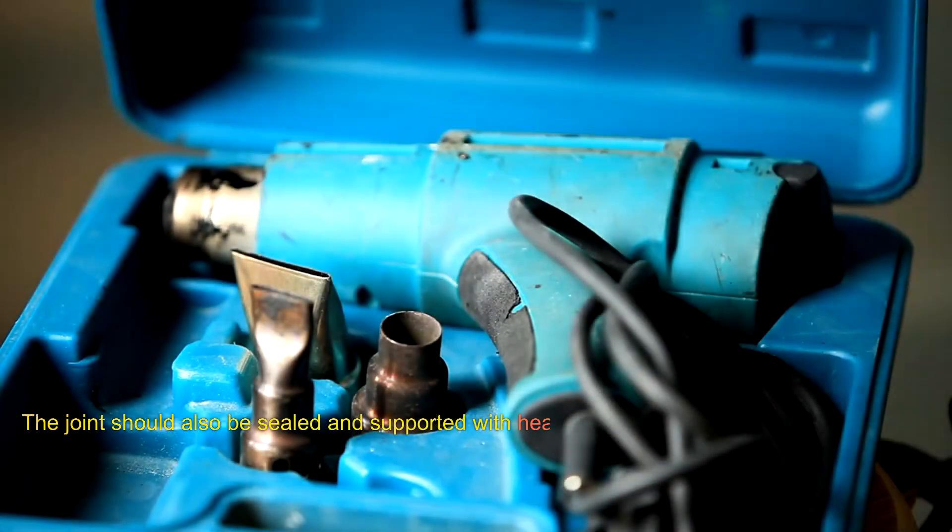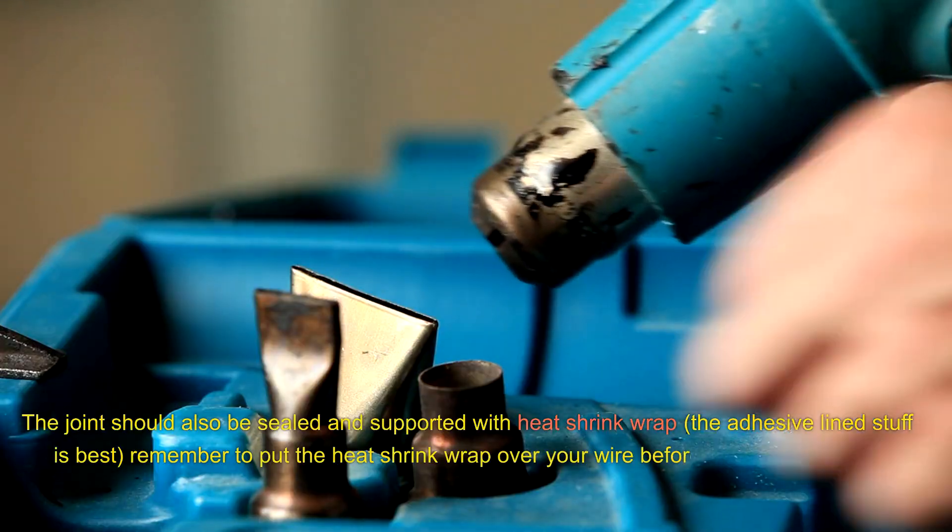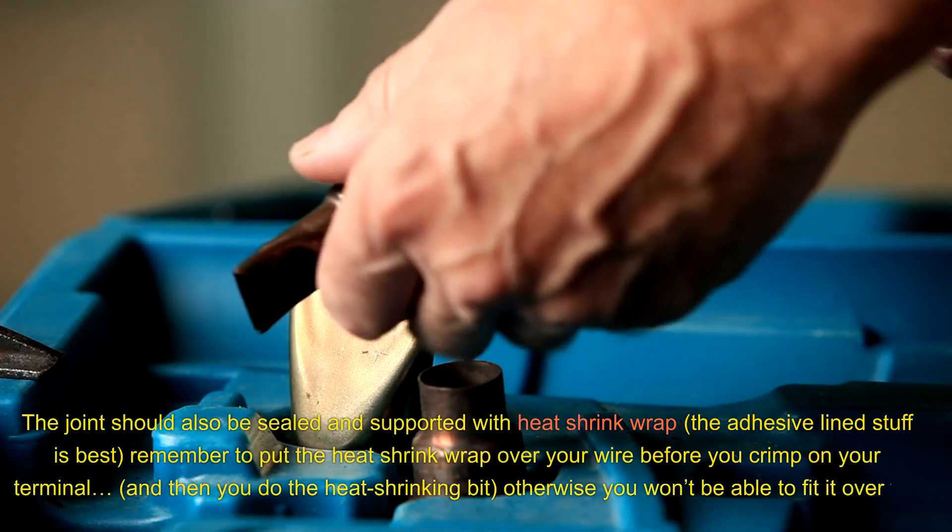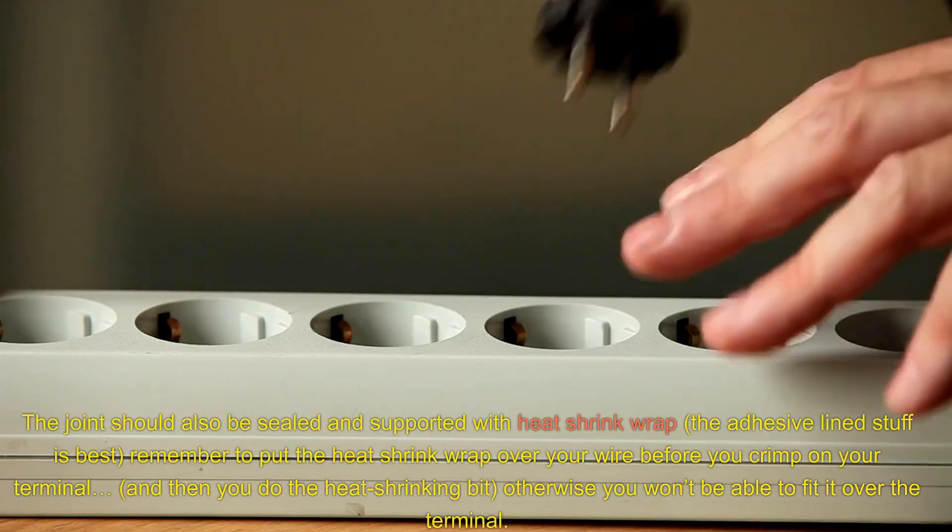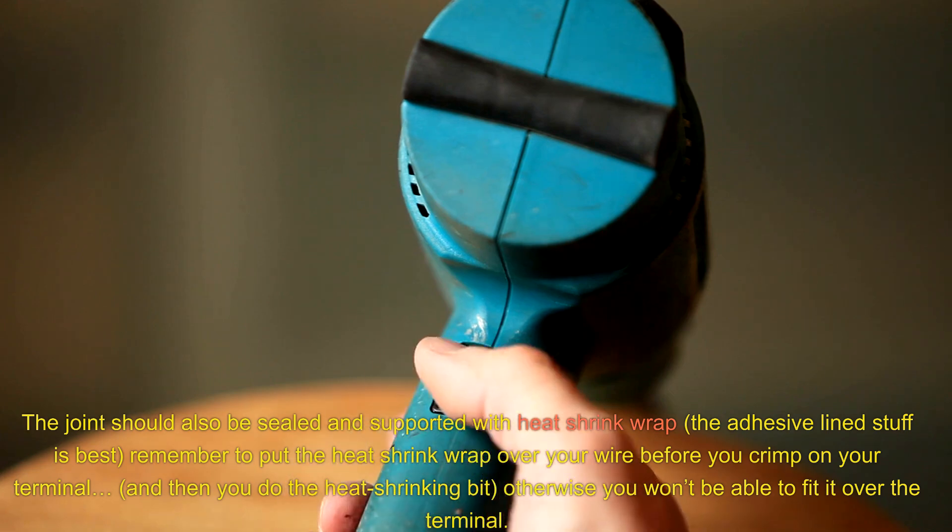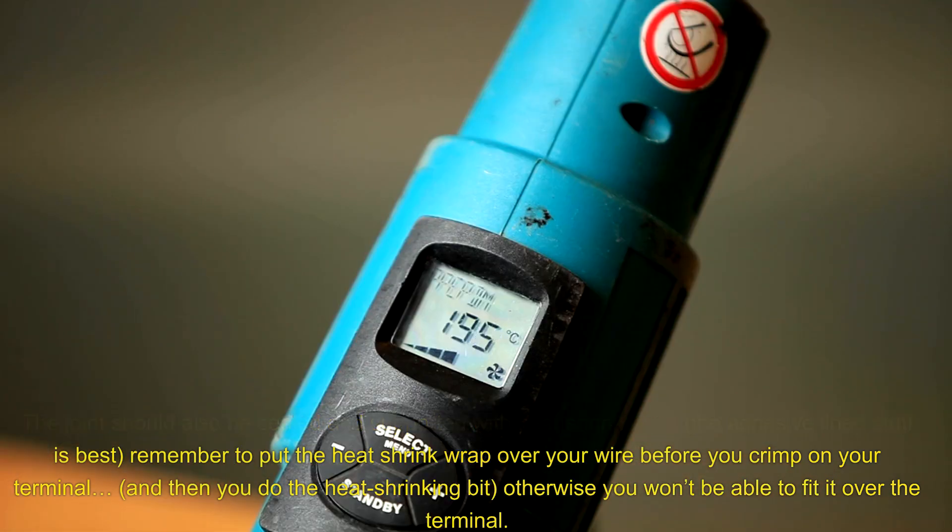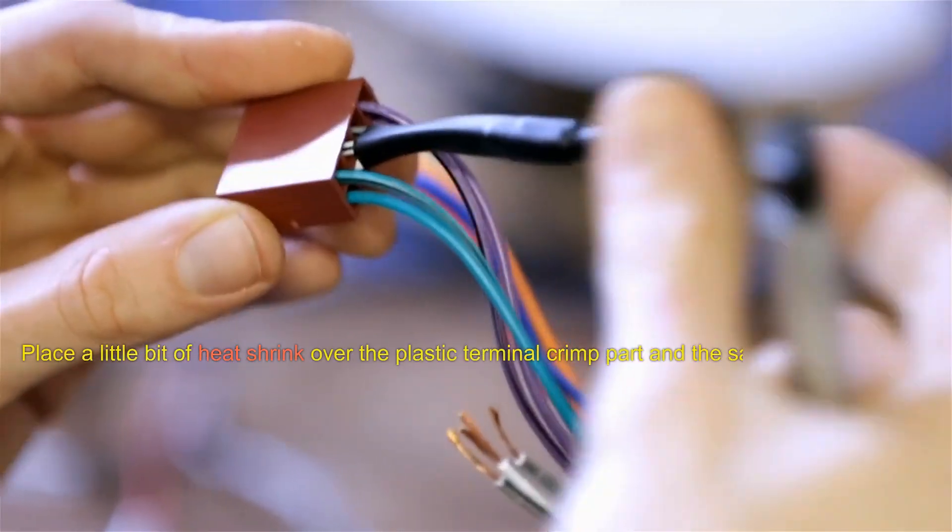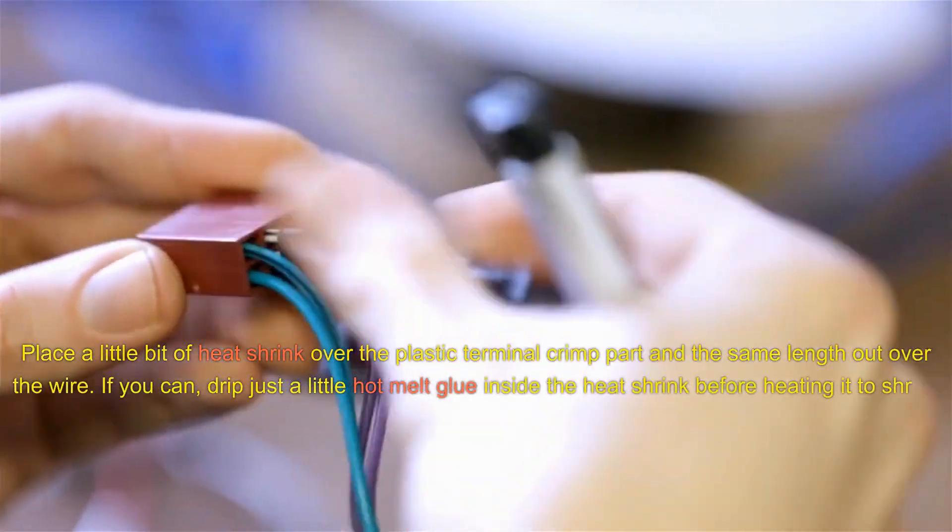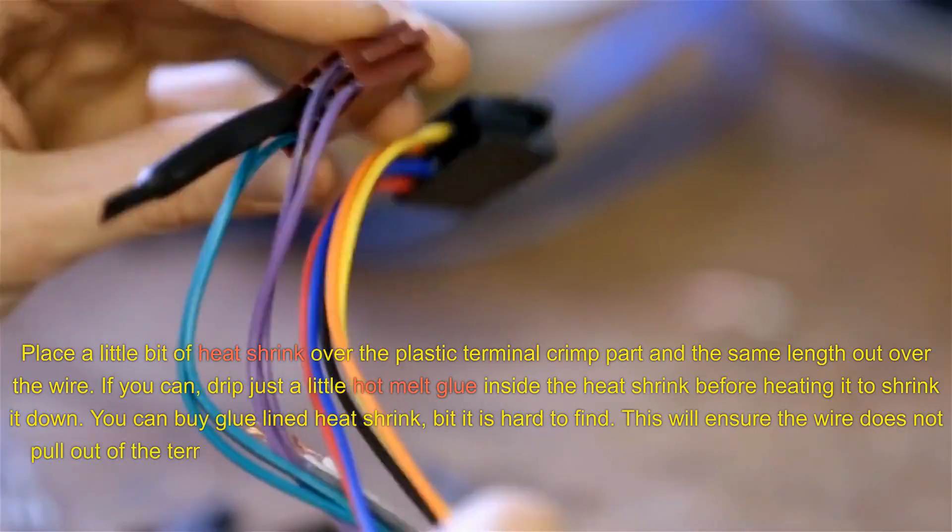The joint should also be sealed and supported with heat shrink wrap. The adhesive-lined stuff is best. Remember to put the heat shrink wrap over your wire before you crimp on your terminal, and then you do the heat shrinking bit. Otherwise, you won't be able to fit it over the terminal.